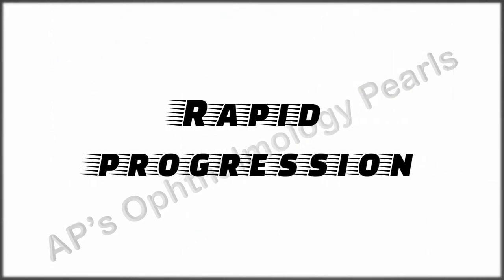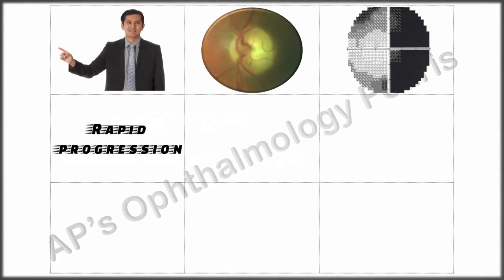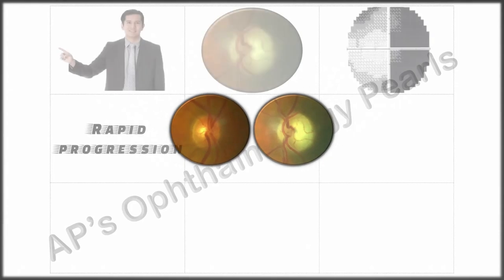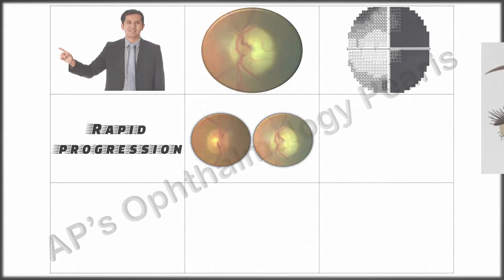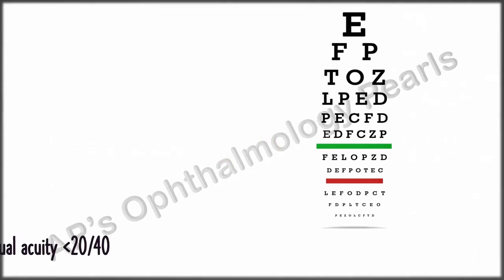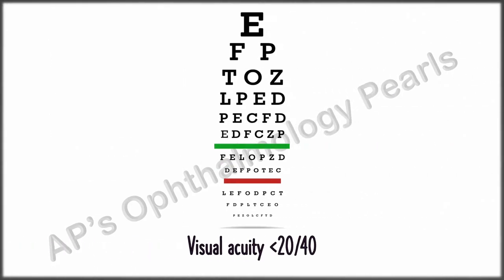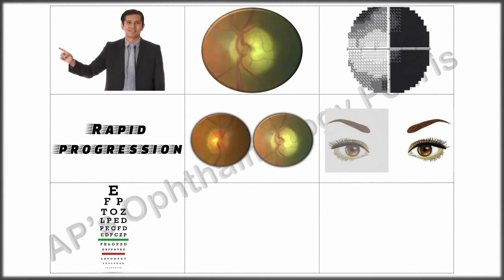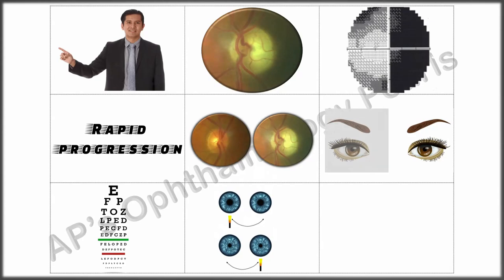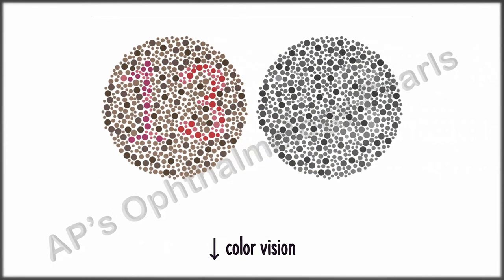Additional red flags include: rapid progression of optic nerve damage; marked asymmetry between the two optic nerves; unilateral involvement; visual acuity less than 20/40 or rapid deterioration in vision (central vision is generally maintained until very late in true glaucoma); a relative afferent pupillary defect (RAPD); and decreased color vision in one or both eyes.